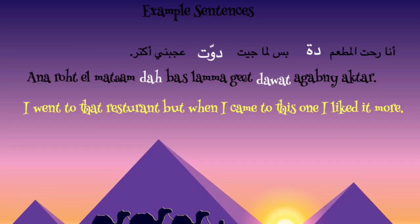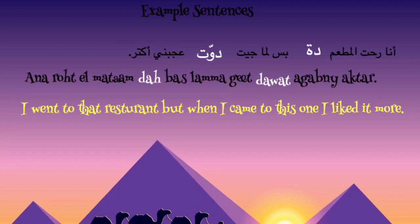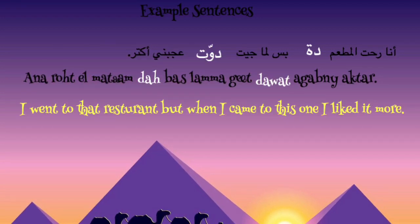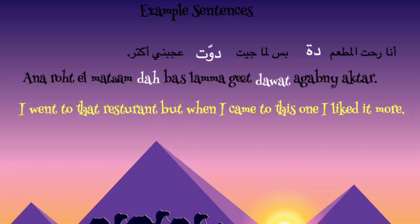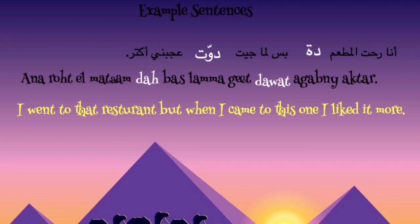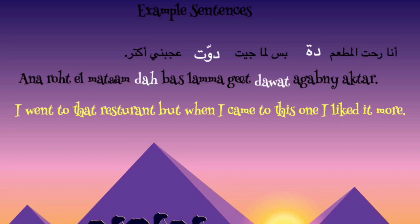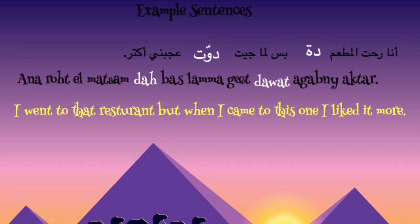'Bas' means but. 'Lamma' means when. 'Geet dawat' — I came, this one. '3agabni aktar' — I liked it more. 'Aktar' is more. So the full sentence: 'Ana roht el mat3am da' — I went to that restaurant — 'bas lamma geet dawat 3agabni aktar' — but when I came to this one, I liked it more.